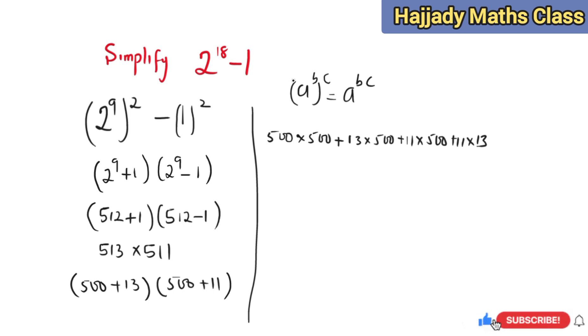Plus, 500 and 500 is the same, so you can factorize that out as 13 plus 11.